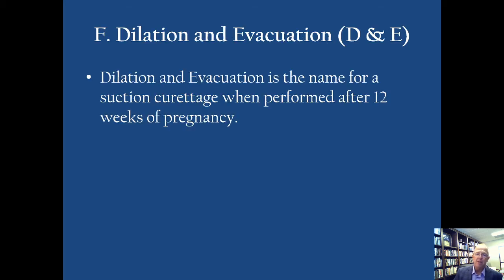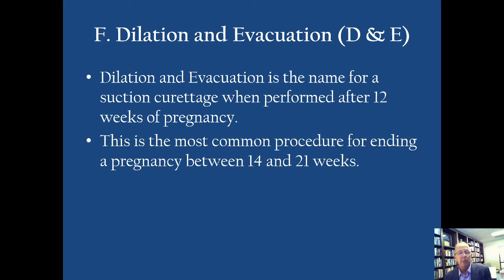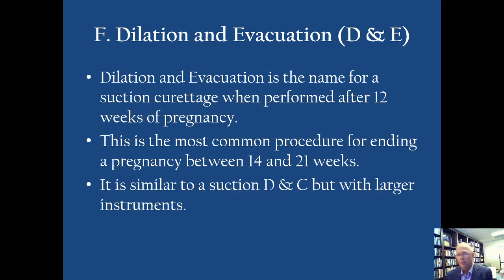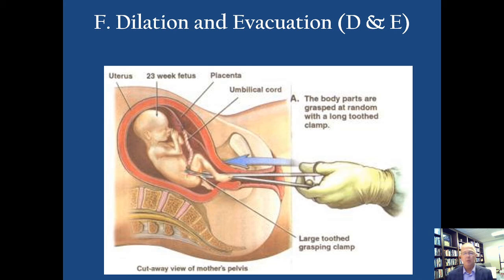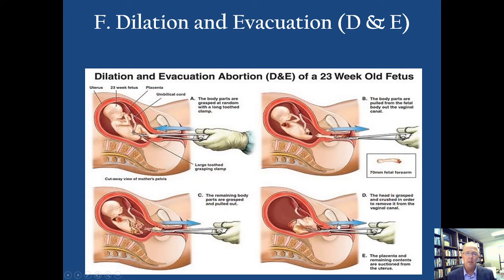Dilation and evacuation is the name for suction curettage when performed after 12 weeks of pregnancy. It's most common during a second-trimester pregnancy, but the vast majority of abortions in the United States are done in the first trimester. It's similar to dilation and curettage or suction curettage, but with much larger instruments. You see the abortionist reaching in, cutting off pieces of the baby — snipping off an arm, pulling them out piece by piece. A suction device is also used at the very end to make sure all the parts are removed. This is a horrid act, but this is what it is.